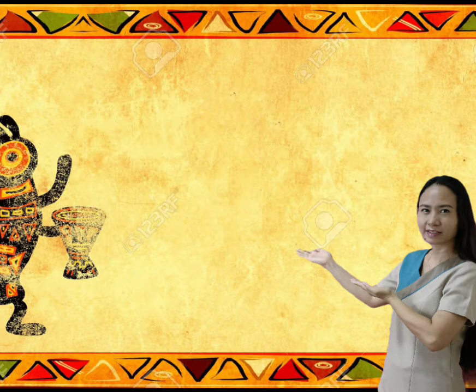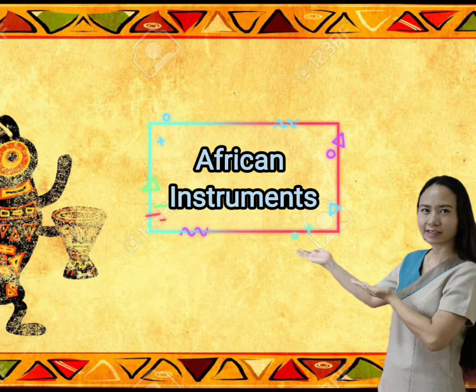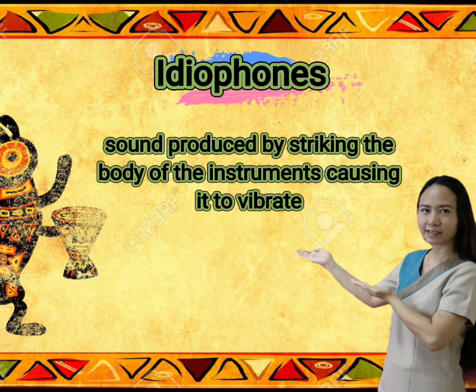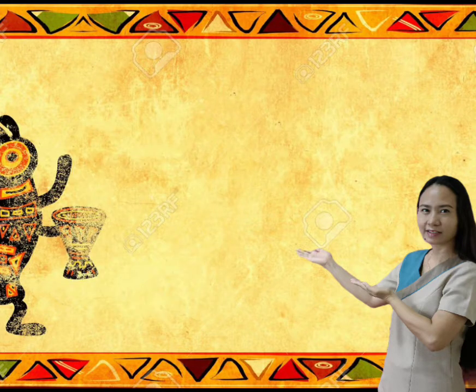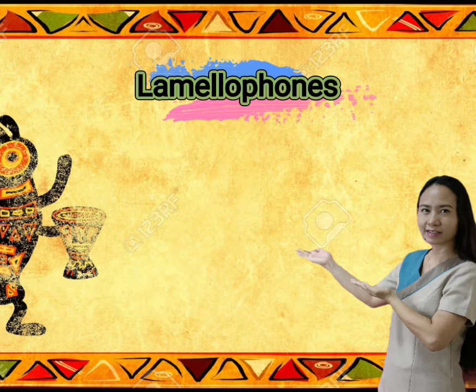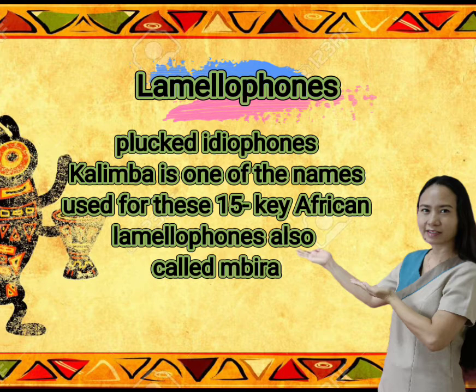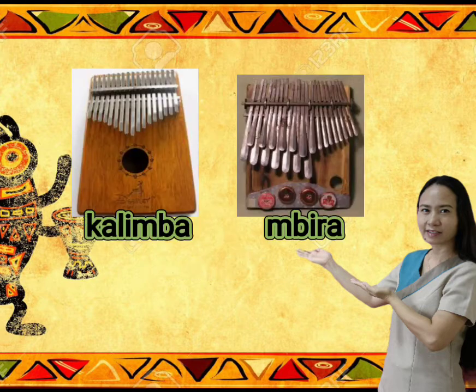We are done with the genres and vocal forms of African music. Now let us study their musical instruments. First, we have Idiophones. Idiophones produce sound by striking the body of the instrument, causing it to vibrate. Next, we have Lamellophones. In the classification of musical instruments, the kalimba is in the category of Lamellophones or Plaque Idiophones. Kalimba is one of the names used for this 15-key African Lamellophone, also called Mbira.